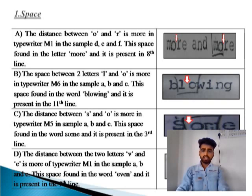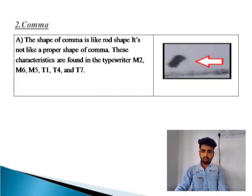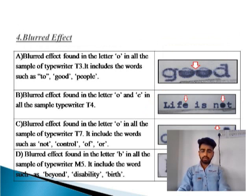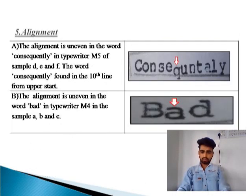Space: You can see an example — there is space in the word, sentence, and paragraph. Here is a spatial example. Comma: The shape of the comma is like a rod shape. Blurred effect: When the ribbon is loose, there is a blurred effect — you can see the difference between a good 'O' and a blurred 'O'. Alignment is uneven in the word, as you can see here.